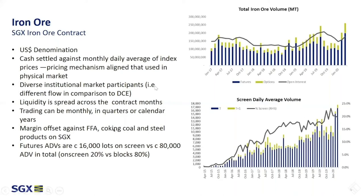We're offering significant margin offsets against other commodity contracts listed on SGX, as well as against other financial contracts. The contract has been listed since 2015, and on-screen liquidity picked up a little bit later. Today, we're looking at a total daily average volume of around 100,000 lots, with 20% of the volume coming from on-screen activity. On the bottom chart, you can see the breakdown of activity between the T and T+1 sessions — daytime in Asia versus overnight in Asia or daytime in US and Europe. Around 20 to 25% of our total activity is happening in the T+1 session.